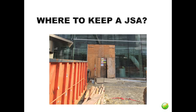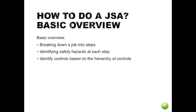How to do a JSA? The JSA process is broken down into three steps: breaking the job into steps, identifying the hazards associated with each step, and identifying the controls. Use the hierarchy of controls when identifying hazards.